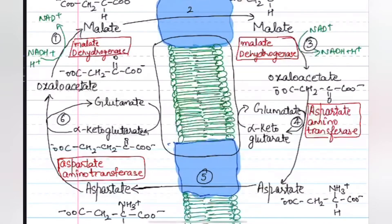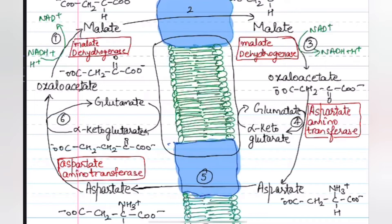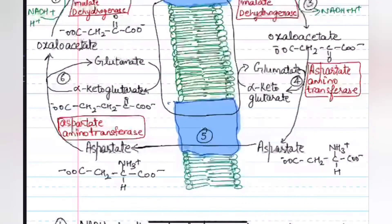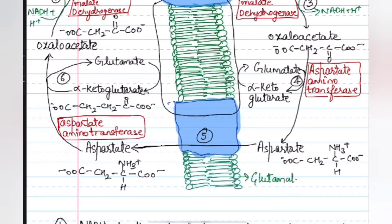Oxaloacetate, with the help of the enzyme aspartate aminotransferase, converts to aspartate. In this process, glutamate also converts to alpha-ketoglutarate.